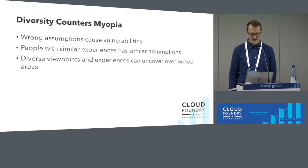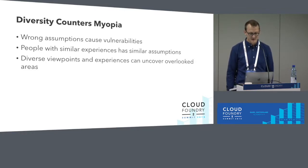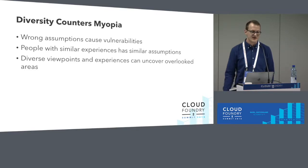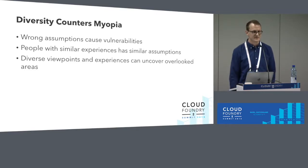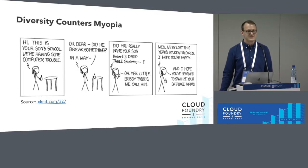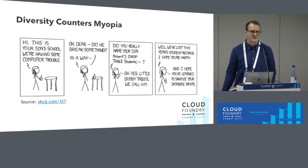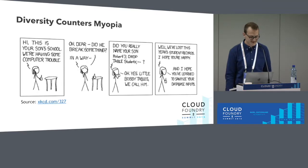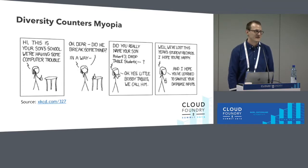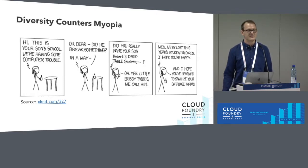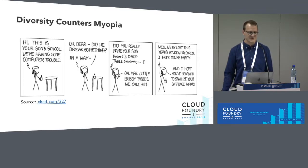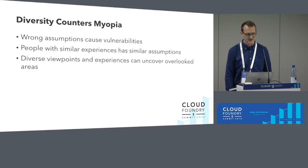The last area is diversity of experience. A large number of security vulnerabilities, basically, the underpinning is that you broke an assumption that someone had. So if you have a user sign-up form and you assume that no one's going to put 'drop table users' as their first name, you might have a bad time. People that have similar experiences are going to have similar assumptions, so having a good diversity of people in the community is a good way to counter that — fresh eyes and new perspectives uncover a lot of things that are overlooked.